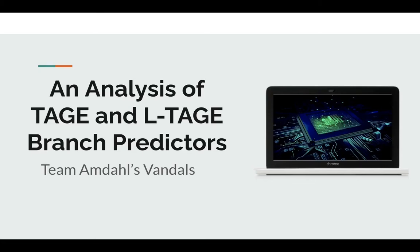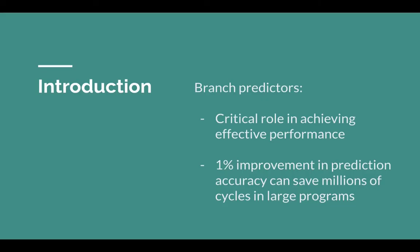This is a presentation for the course project of the computer architecture course, done by team Amdals Vandals. The title of the project is an analysis of TAGE and LTAGE branch predictors. Branch predictors have a critical role in achieving effective performance because even a one percent improvement in prediction accuracy can save millions of cycles in large programs, thereby improving latency and performance to a very large extent.